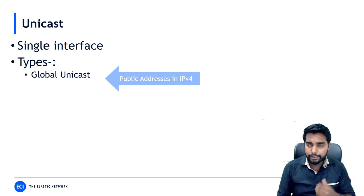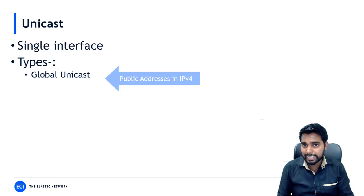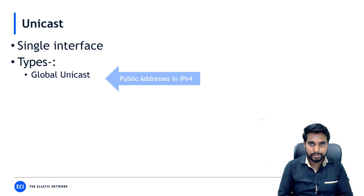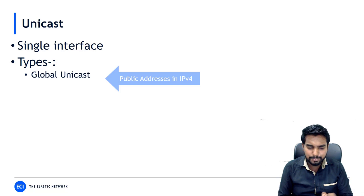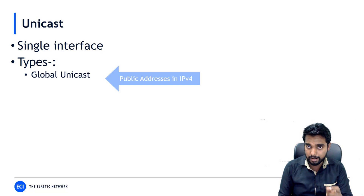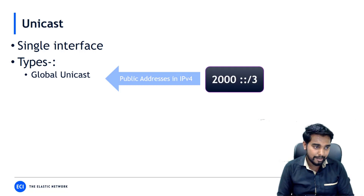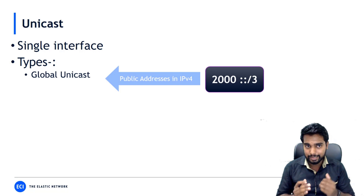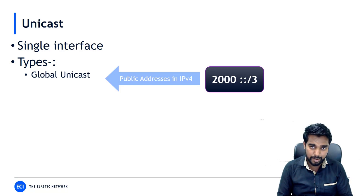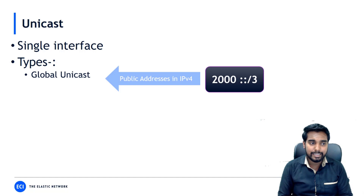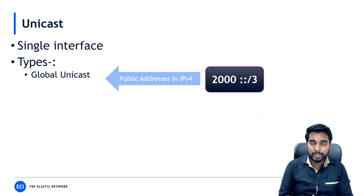In IPv4, public addresses were Class A, B, and C excluding reserved addresses. In IPv6 it's simpler — there's a specific range, and if any address belongs to that range it's a global unicast address. For example, 2000::3 is a global unicast address, representing the network address where the remaining bits are host bits.